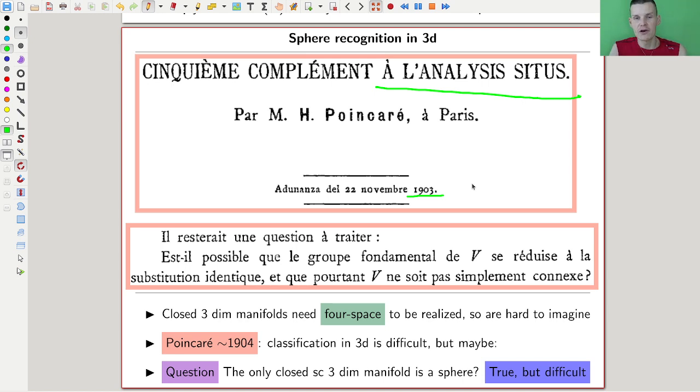Exactly the same as we have seen before for two-dimensional structures, just for three-dimensional structures. Their classification is quite difficult, but maybe the question of how to recognize whether a three-dimensional manifold, a 3D version of a surface, is a sphere. This is the famous Poincaré conjecture.